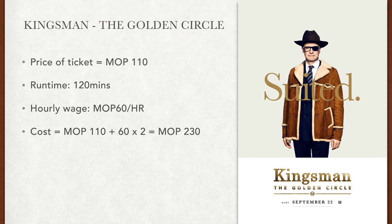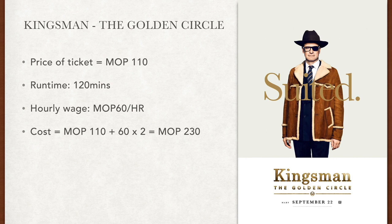The answer is actually very simple. We break down the opportunity cost into two parts. The money cost here is the price of the movie ticket, which is $110. The time cost is the wages you could originally earn if you chose to work in the restaurant, which is $60 times two, that is $120. So the total opportunity cost of going to watch the movie Kingsman is $230.